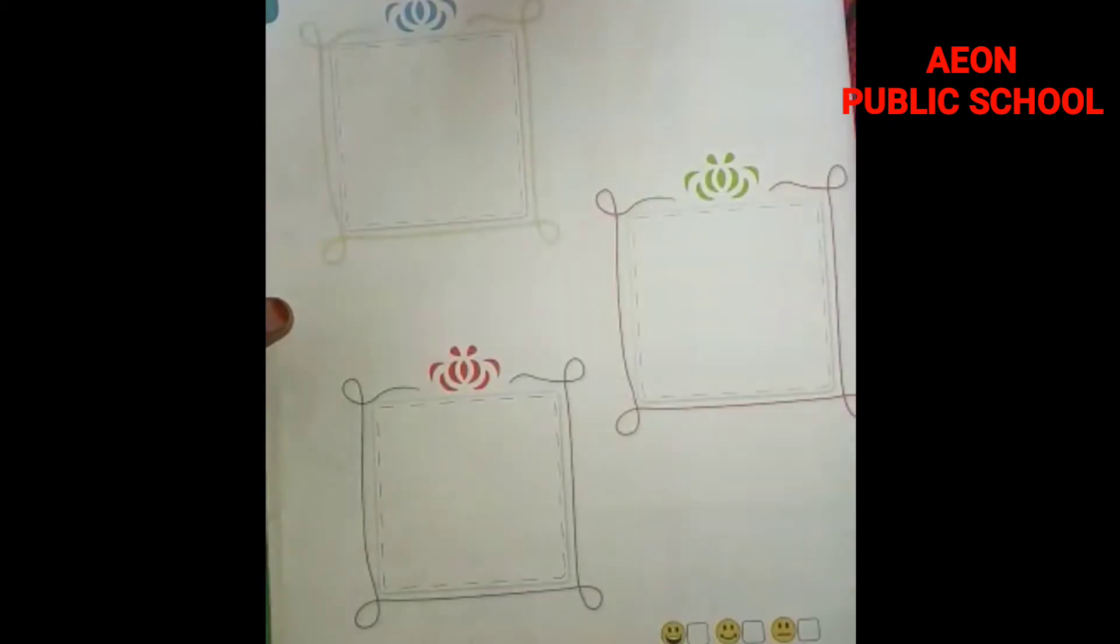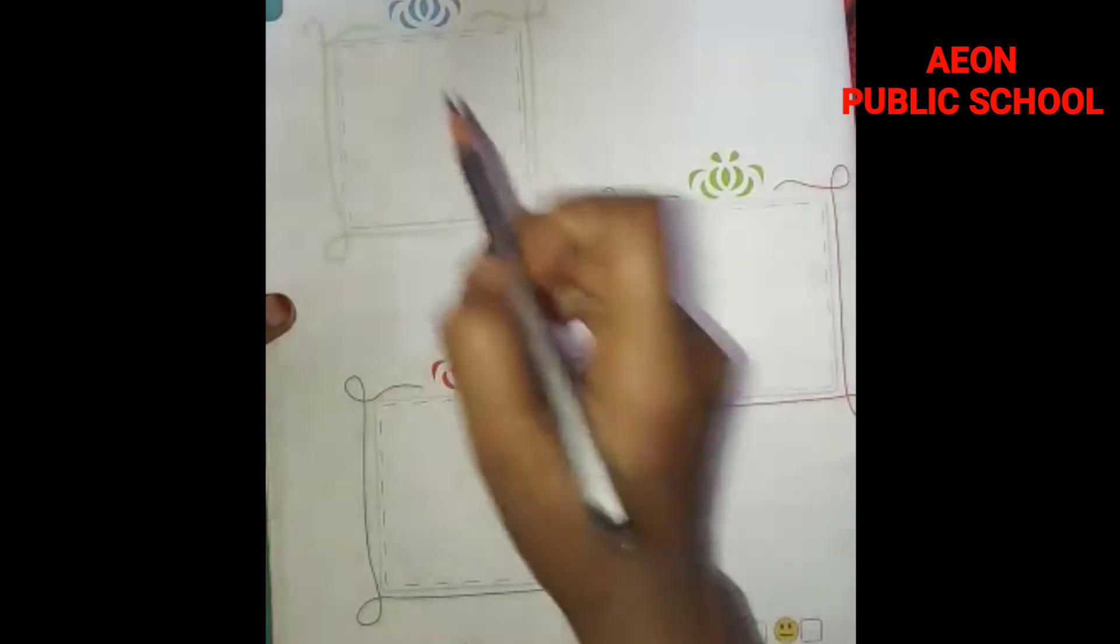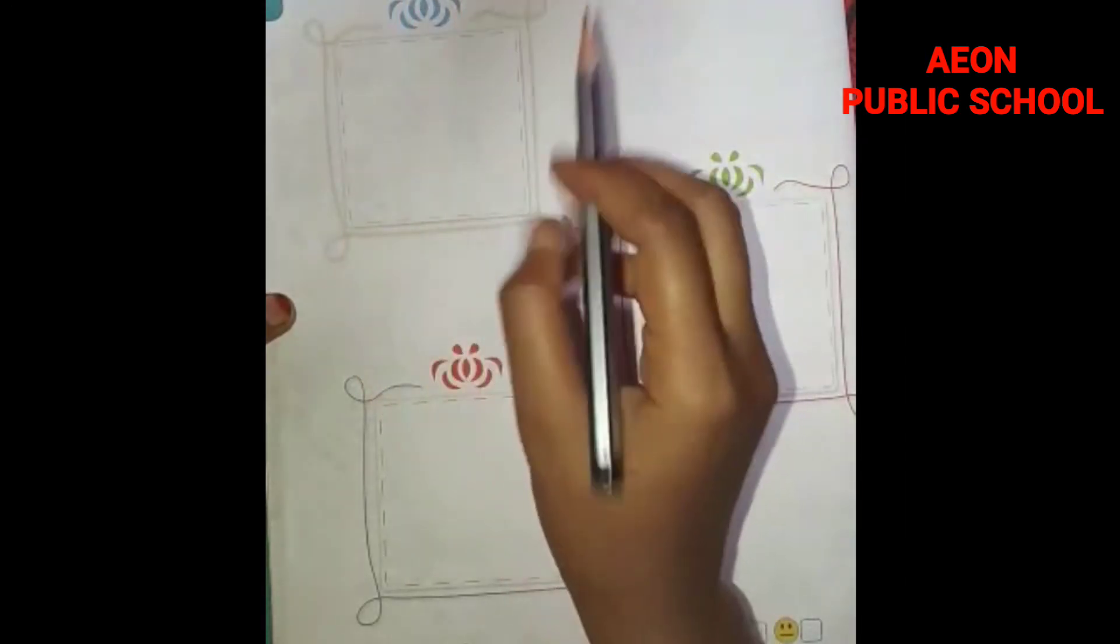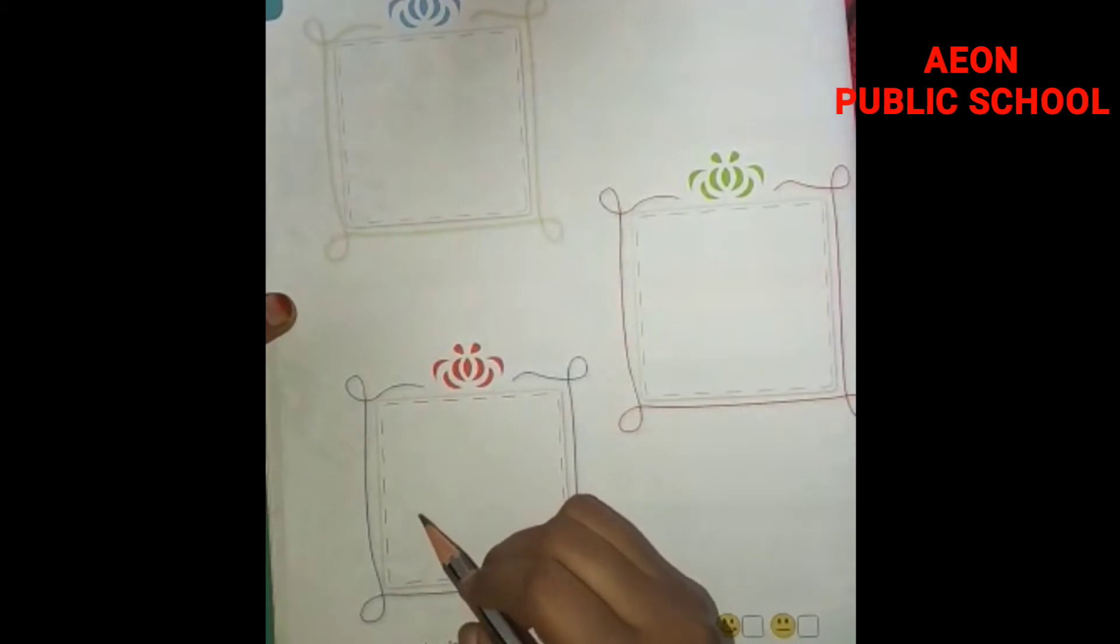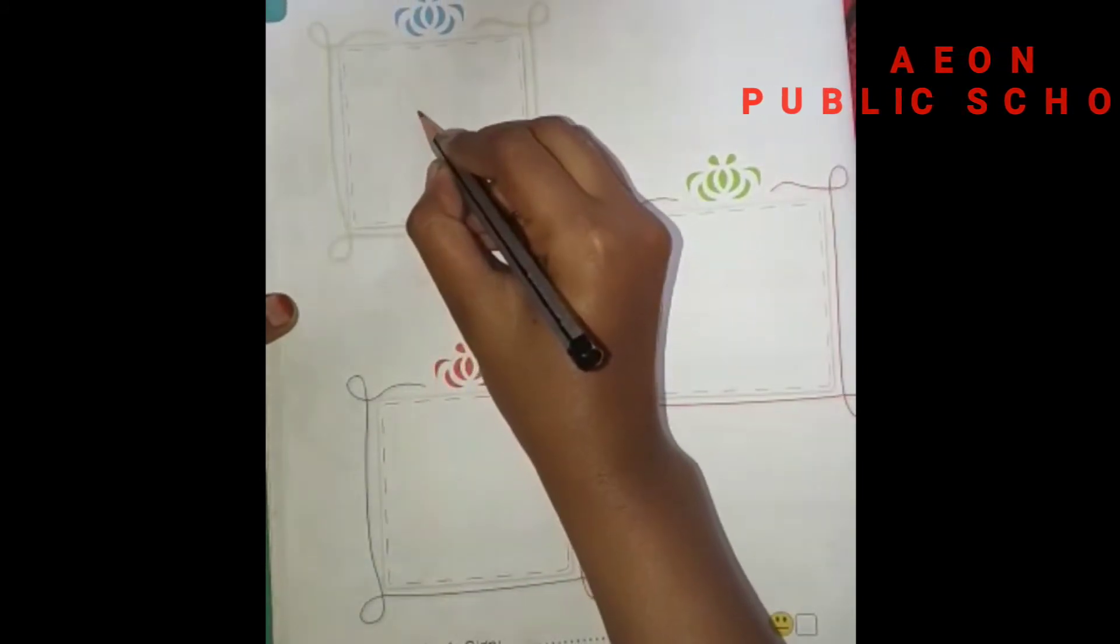Now turn your page and take out page number 2. In this page you have to draw any 3 objects you like. So in this box you have to draw any object you like. Draw by yourself only.